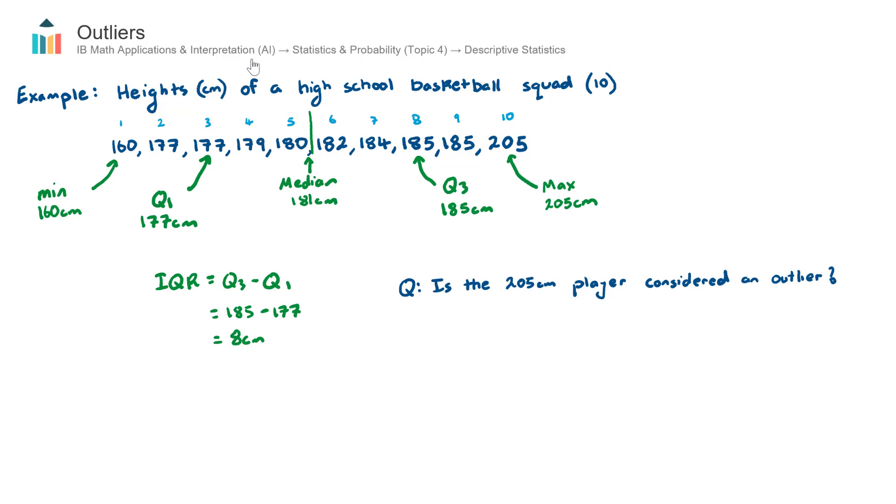Up until now in the AI course you've probably heard the word outliers before, and maybe you had to think about whether a particular data value that was either very large or very small was an outlier or not, and usually you'd probably just use a sort of gut feel.